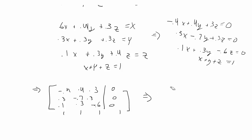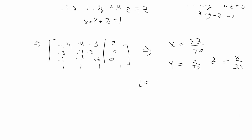The values in the matrix table will be given in decimals. If you hit Math and then 1, that will change the answer to a fraction. Hitting enter again, you'll get X equals 33 over 70, Y equals 3 over 10, and Z equals 8 over 35. So your steady-state matrix or vector is [33/70, 3/10, 8/35], and we're done with this one as well.